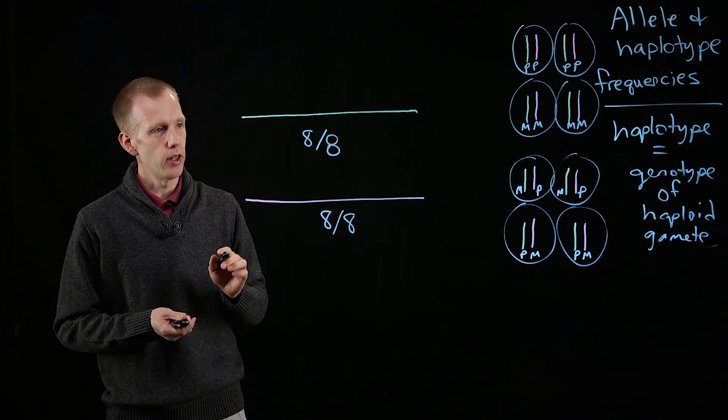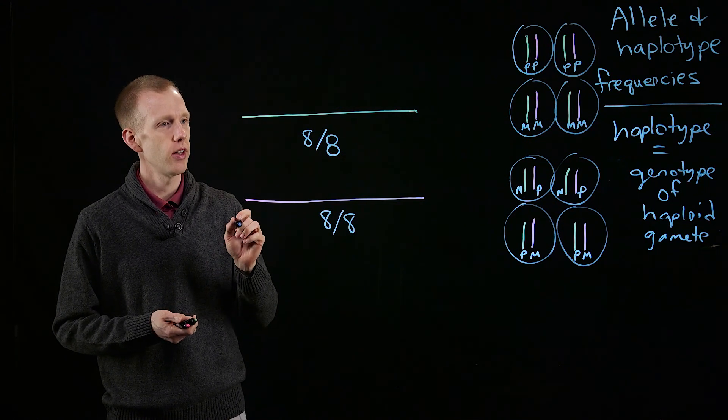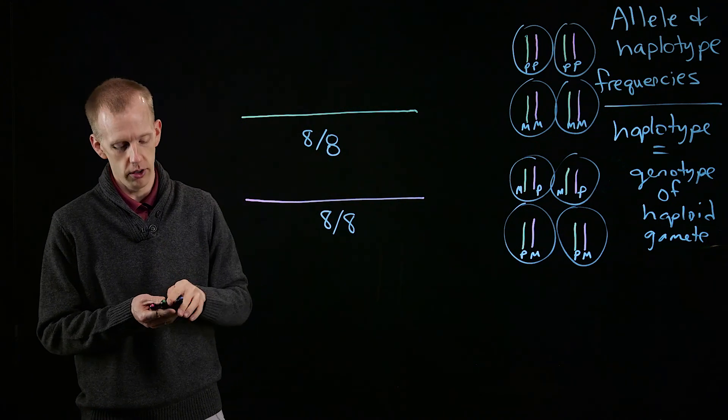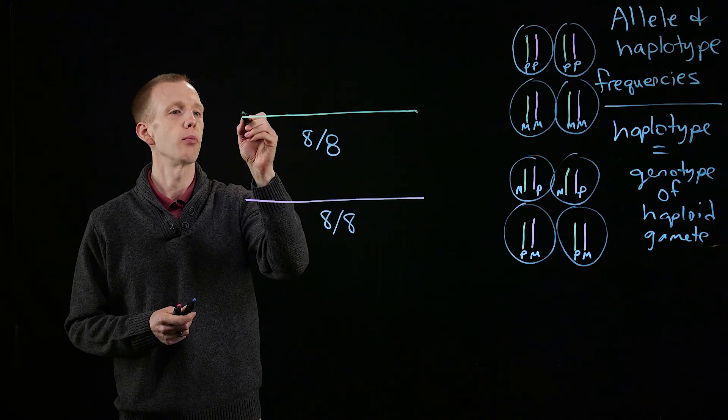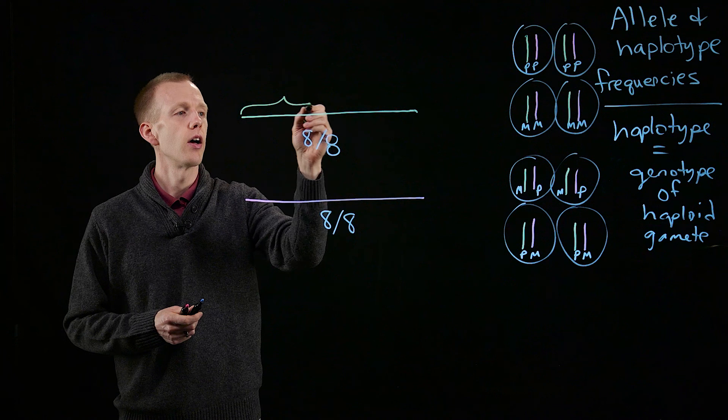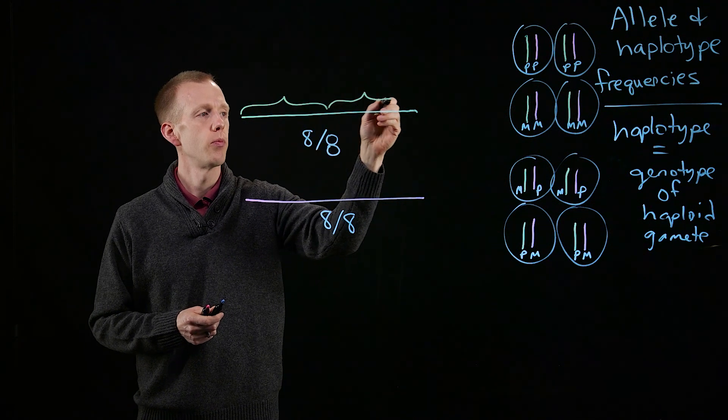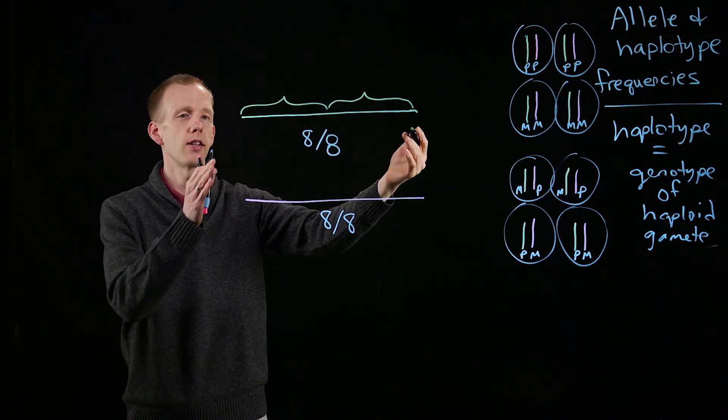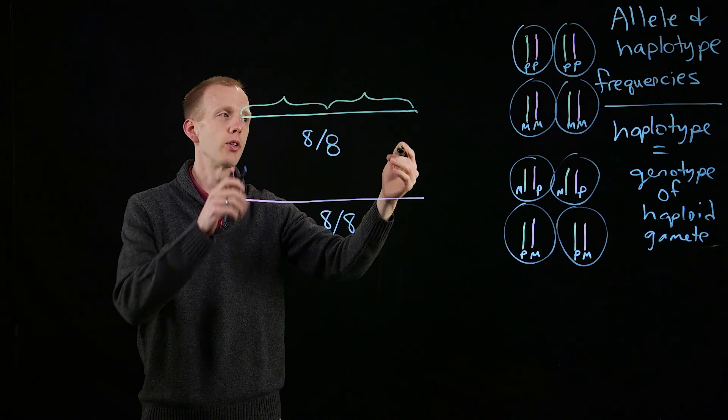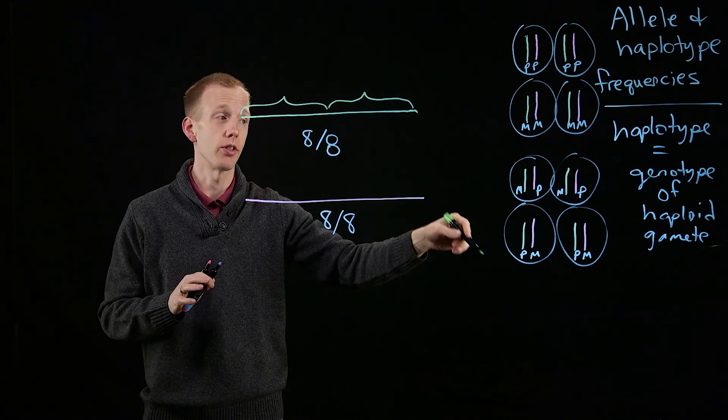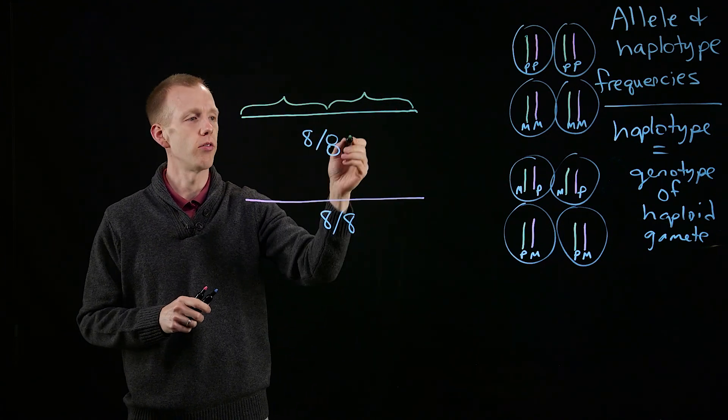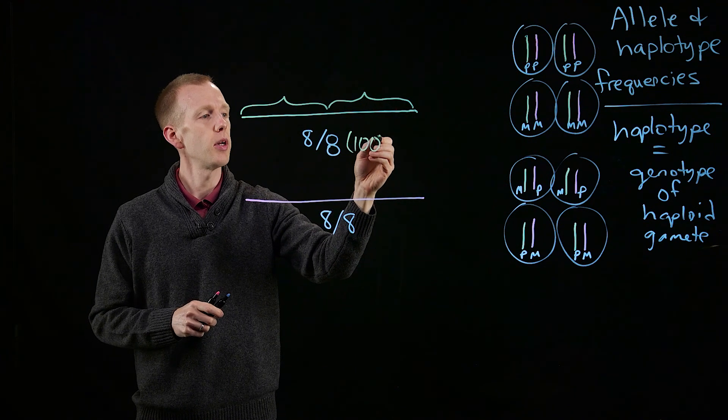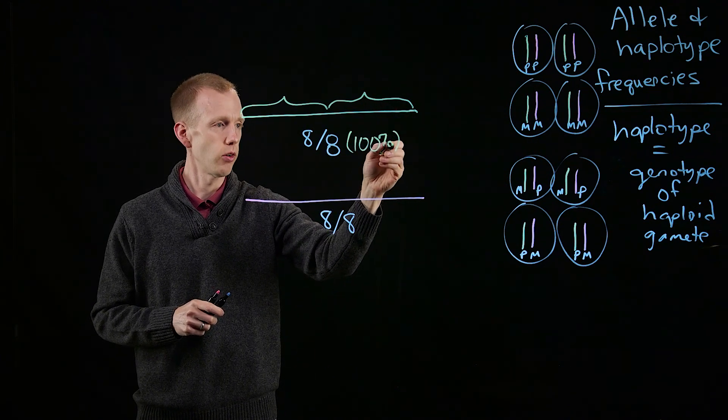And Mendel's second law, independent assortment, tells us that there will be two different versions in a diploid of that chromosome. So we could imagine dividing this line, representing the eight different, the frequency, 100% of all of the green chromosomes.